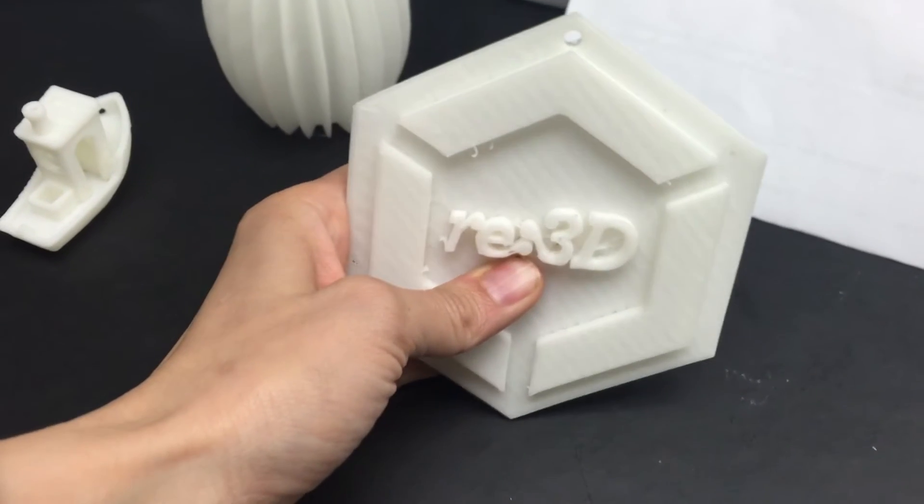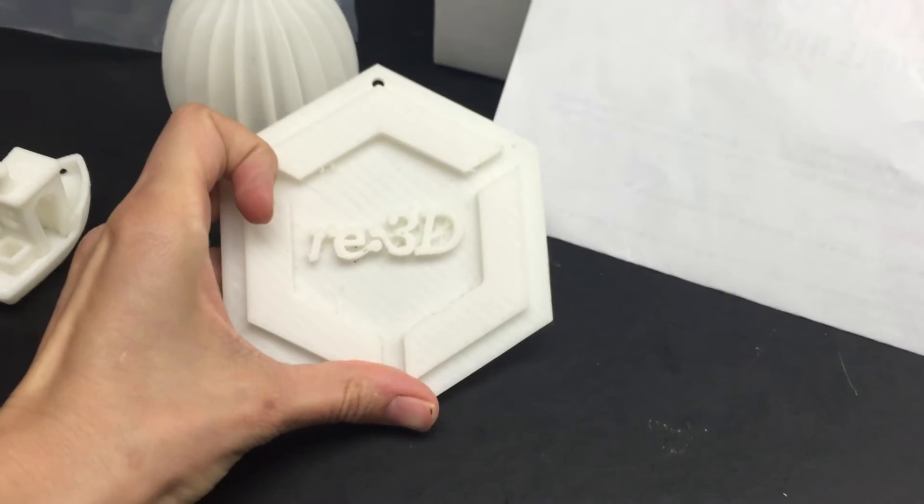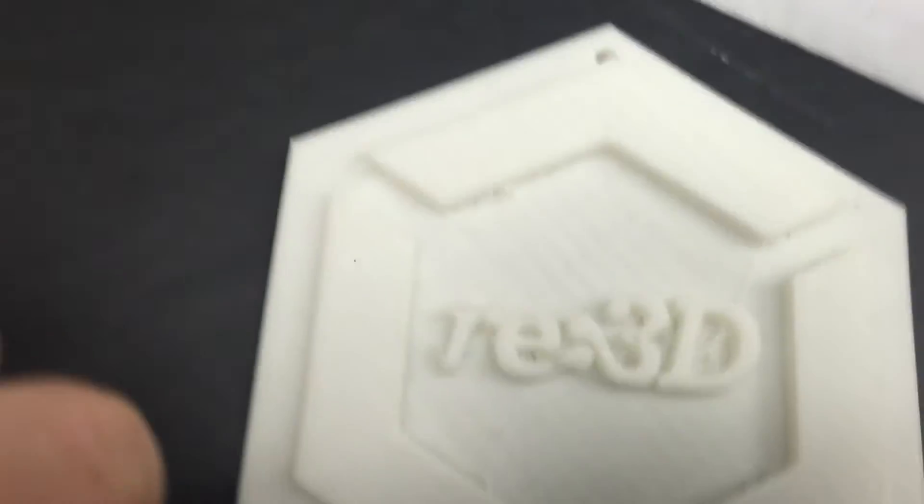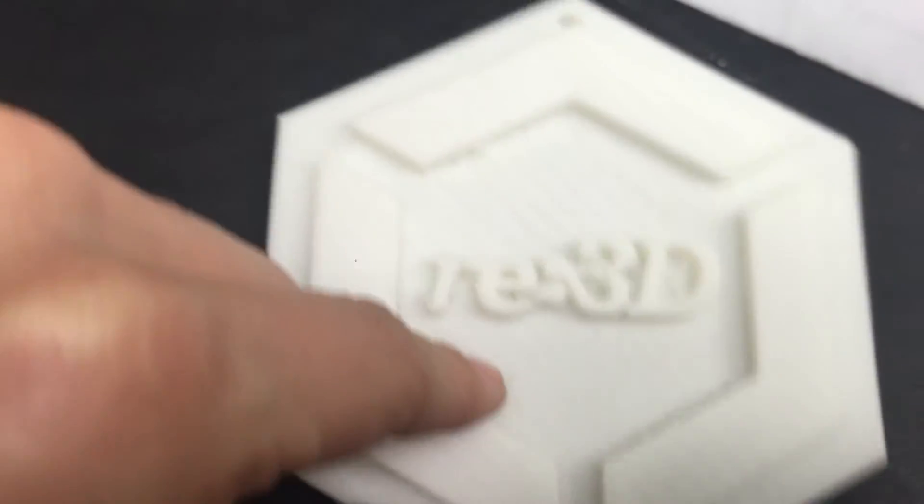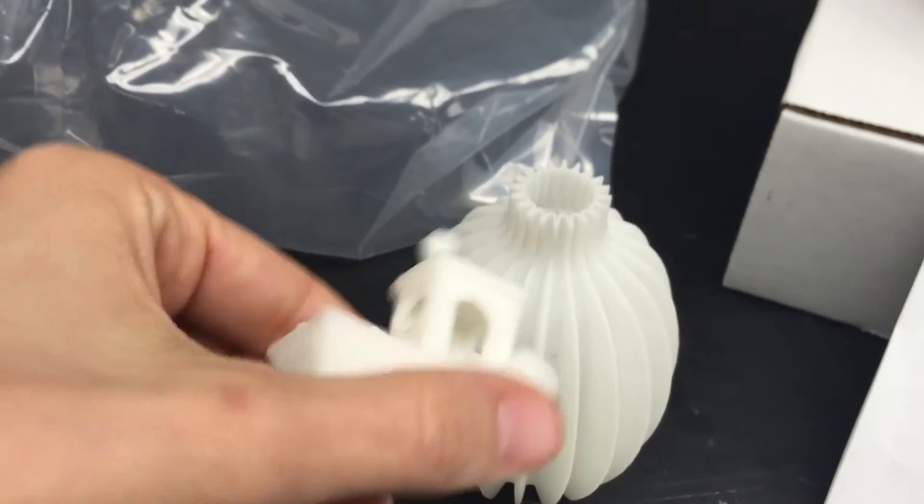The other thing you'll notice with this print is there's a little bit of stringing. I can clean this up, so you probably would never know that it's there. Let me zoom in here so you can see it. What we learned is that was attributed to the retraction setting. So I actually had to go ahead and double that, which I'll put in the blog. That allowed me in this third print here to then print actually a pretty good benchy.